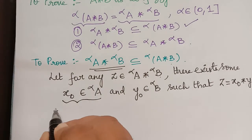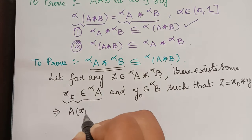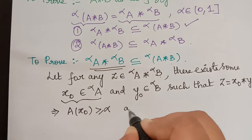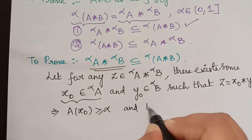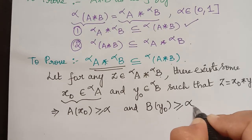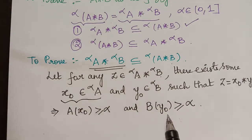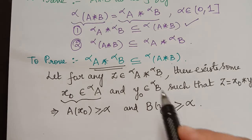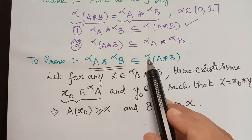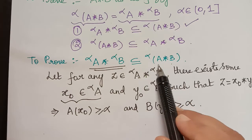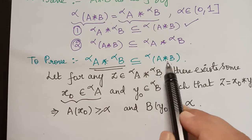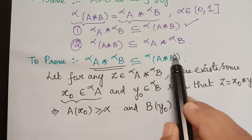Since x₀ is an element of the alpha-cut of A, by the definition of alpha-cut, A(x₀) ≥ α. Similarly, since y₀ is an element of the alpha-cut of B, B(y₀) ≥ α. Now we need to prove that z also belongs to the alpha-cut of A★B, which requires showing that the membership grade of z with respect to the fuzzy set A★B is greater than or equal to α.